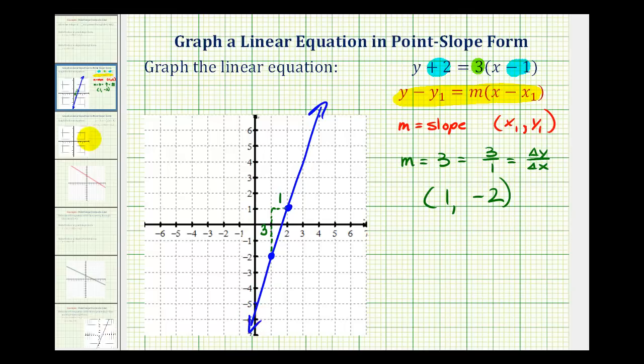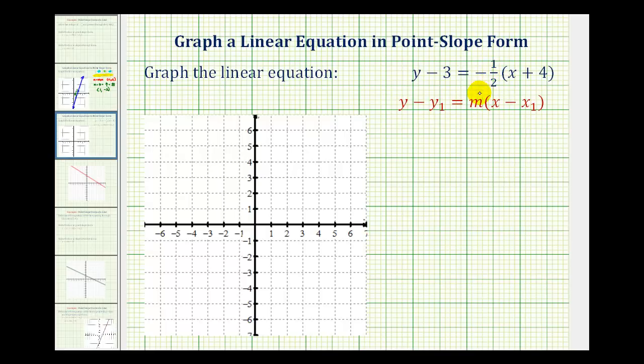Let's go ahead and take a look at a second example. Here notice the slope is going to be negative one-half. And then the point on the line, here we have x plus four, which means the x-coordinate would be negative four. And here we see y minus three, so the y-coordinate would be positive three.